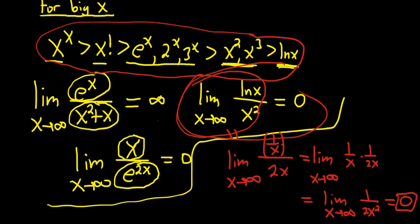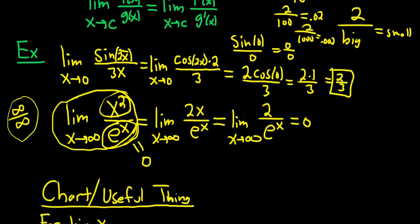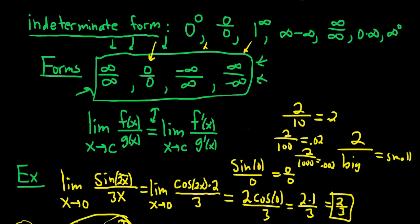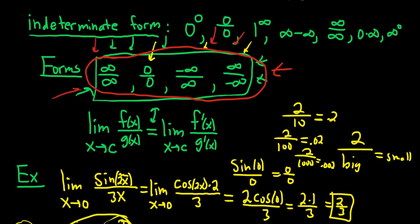So that's L'Hopital's Rule. Remember, when you're approaching 0, you can't use the growth rate chart — that only works if you're approaching infinity. The only indeterminate forms you can use L'Hopital's with are infinity over infinity and 0 over 0. In the problems that follow, you'll see tons of examples — always try to take the easiest possible route when doing a problem.